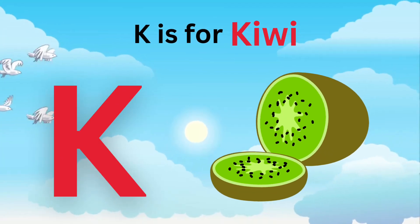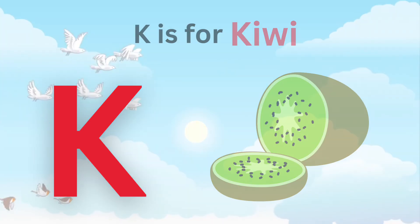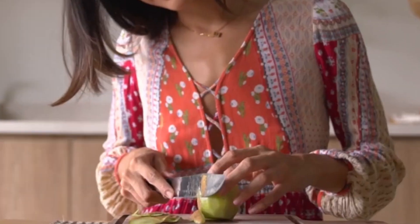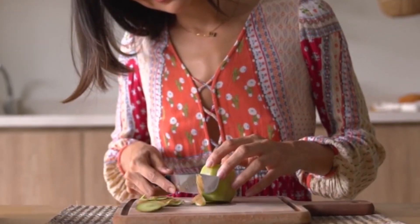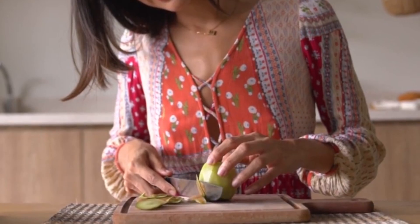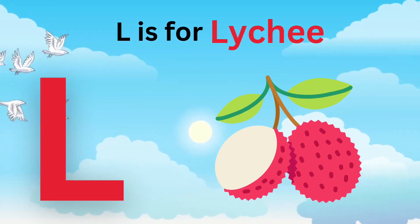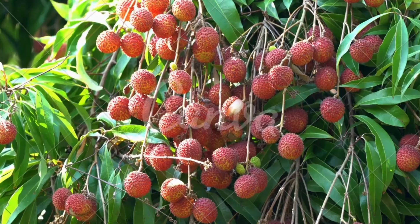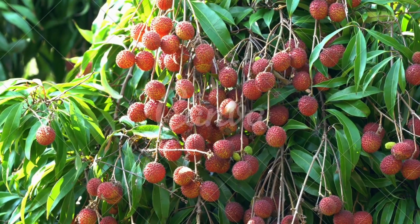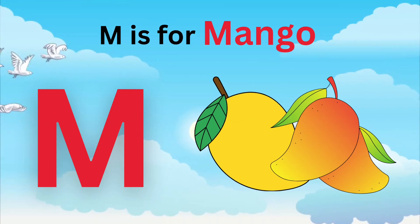K is for Kiwi. K, K, Kiwi. K is for Kiwi. K, K, K. L is for Lychee. L, L, Lychee. L is for Lychee. L, L, L.